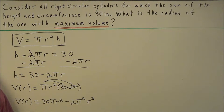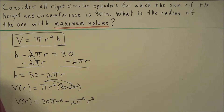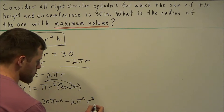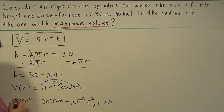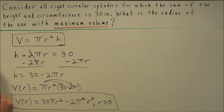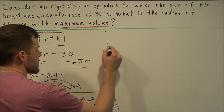One important thing is to consider the domain of this function. Considering that we're talking about a right circular cylinder, the radius has to be positive, so we need r to be greater than zero. We're going to box this off because it's a very important piece of information for solving this problem.